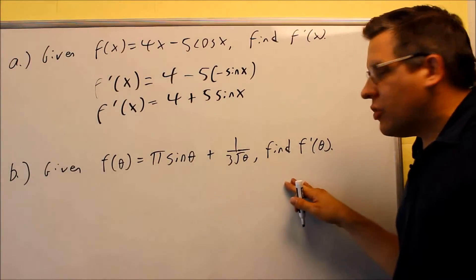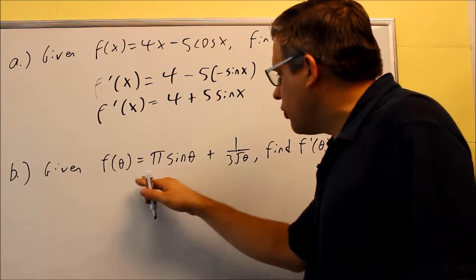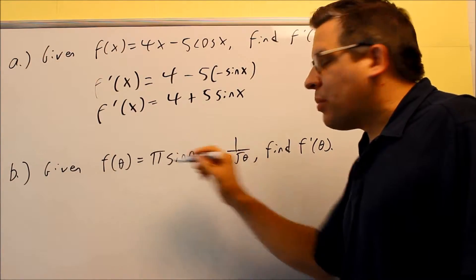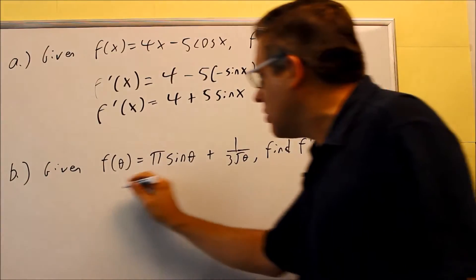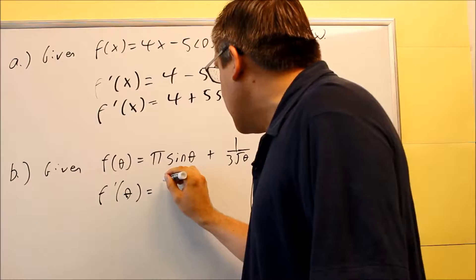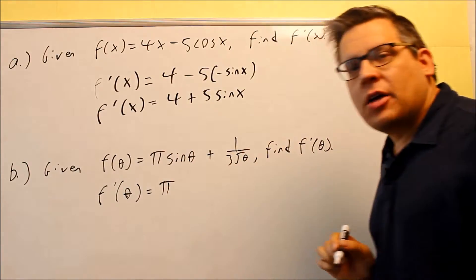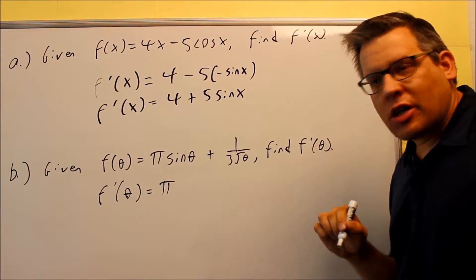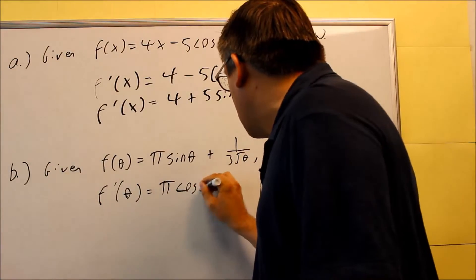Next, we're going to do this one down here. Now when we do the derivative of this term, the π is the same thing as a constant. So what I'll do is I'm going to leave the π there and then multiply it by the derivative of sine, which we already talked about already, is going to be cosine θ.